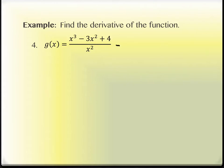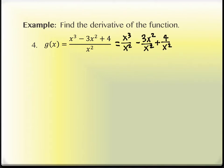If you think about what you know about fractions — usually we get common denominators to combine fractions into one. Right now the expression has a common denominator of x squared for all pieces in the numerator, and I'm going to separate it into three separate fractions: x cubed over x squared, negative 3x squared over x squared, and 4 over x squared. Each of those pieces can be rewritten so we can use our basic derivative rules.